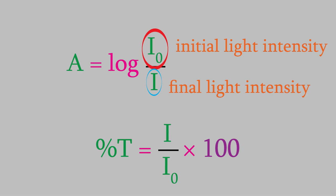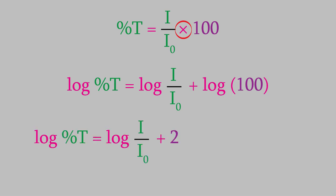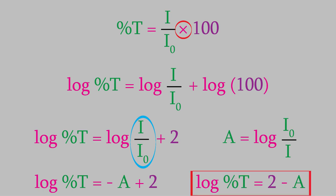Notice what happens if we take the logarithm of both sides of the transmittance equation. If you remember the way logarithms work, you might recall that the logarithm of two things that are multiplied together is the same as the logarithm of each one added together. Now, on the right side, we have the logarithm of 100, which is equal to 2. And if you compare the other term to the definition of absorbance we saw earlier, you'll see that this term is the same as negative A. So, the logarithm of the percent transmittance is just equal to 2 minus A. That allows us to convert easily between absorbance and transmittance.